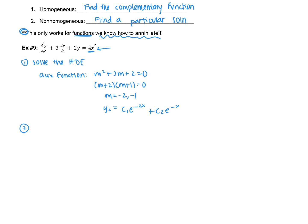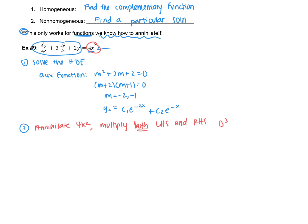Second step — now focusing on the non-homogeneous part: we need to annihilate 4x². To annihilate x², we multiply both sides of the equation by D³. Applying D³ to the left side, we factor to get D³·(D + 2)·(D + 1)·y = 0, since multiplying the right side by D³ annihilates the 4x².